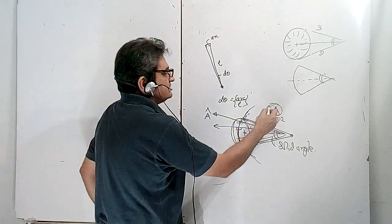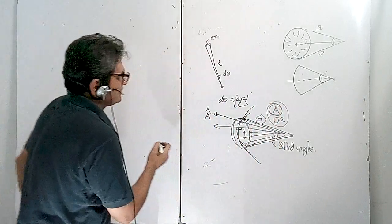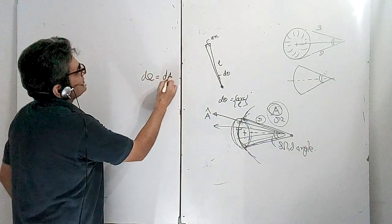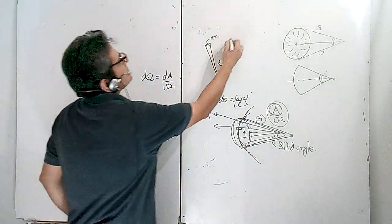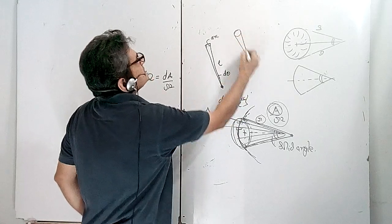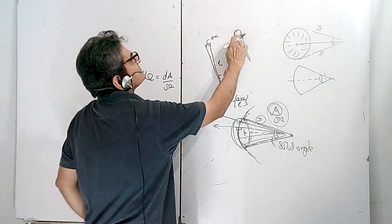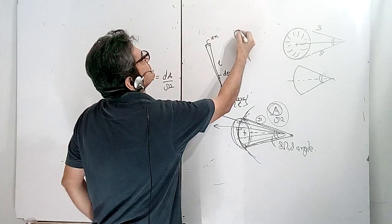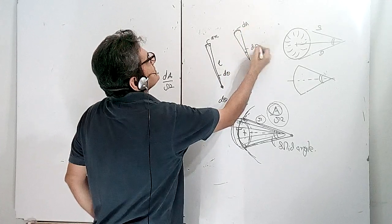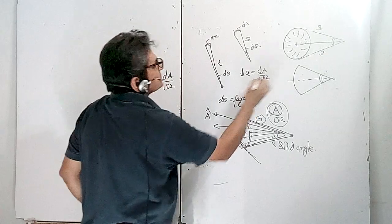That area vector should be parallel to all the lines coming from the point. In that case, this area divided by this distance squared is the solid angle. So solid angle dΩ = dA / r². If you take a very small three-dimensional patch, with area dA and distance r, then dΩ = dA / r² is the solid angle.